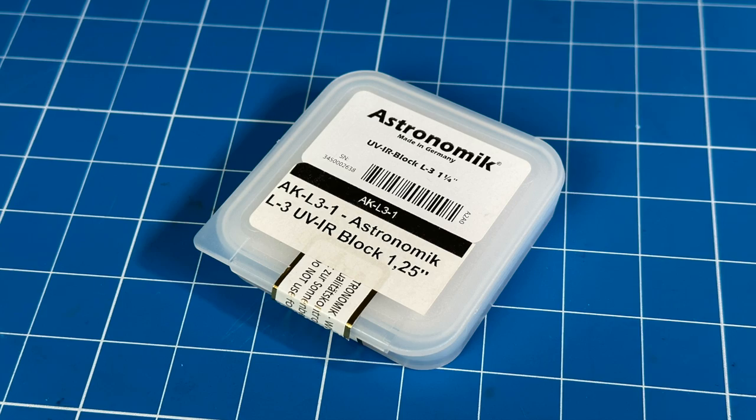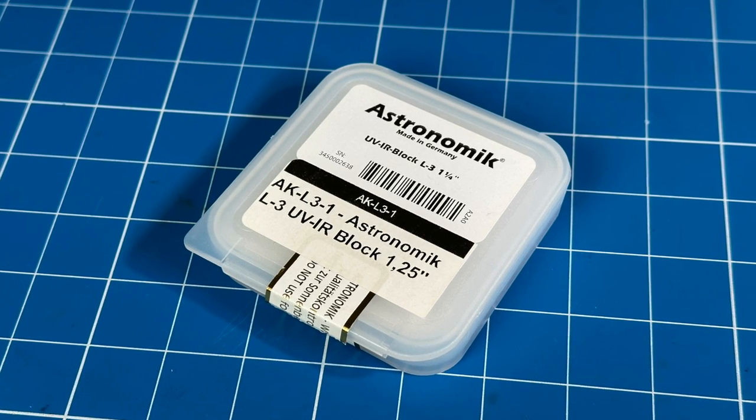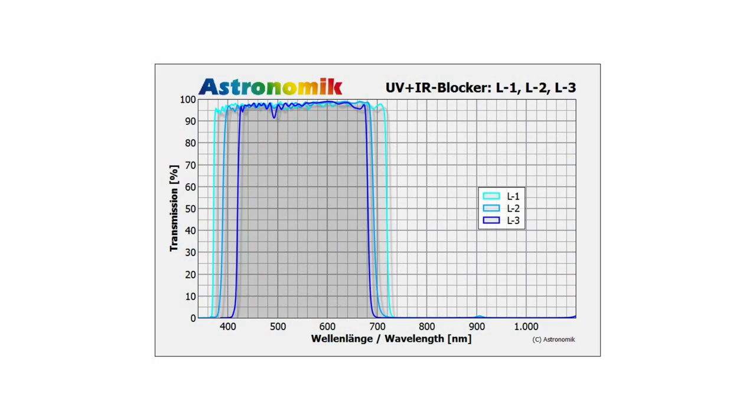Let's take a look at one of my own filters, an Astronomic L3, which is a luminance filter. I purchased this specific UV-IR blocking filter because it is designed for refractors that have a less than perfect color correction, which is the case of my own budget refractor. This filter rejects everything under 420 nm, which is the deep blue part of the spectrum, where most refractors start to degrade pretty significantly. To understand why that is important, I prepared this slide.